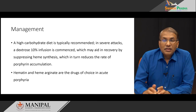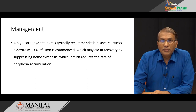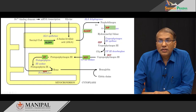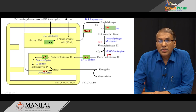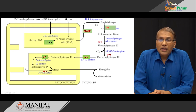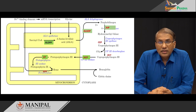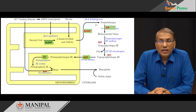ALA synthase is one of the key regulatory enzymes for the entire heme synthesis pathway and is under tight genetic regulation through transcription as well as feedback inhibition from heme. This knowledge of feedback inhibition of ALA synthase by heme has been exploited — in patients with porphyrias, we can give hematin or heme arginate, which can successively inhibit or suppress ALA synthase activity, leading to therapeutic benefit.